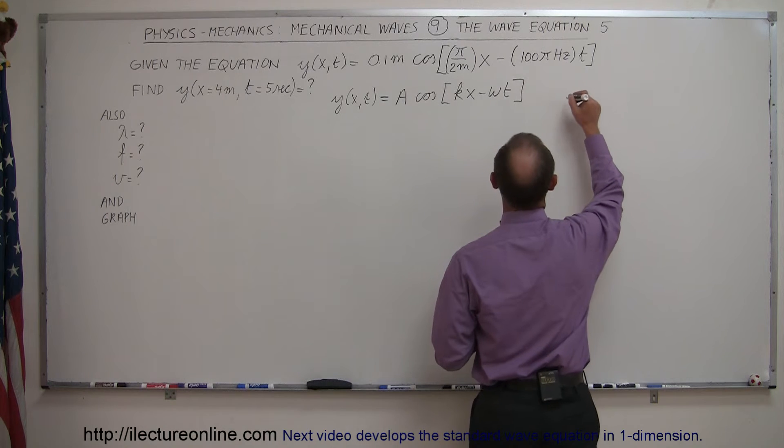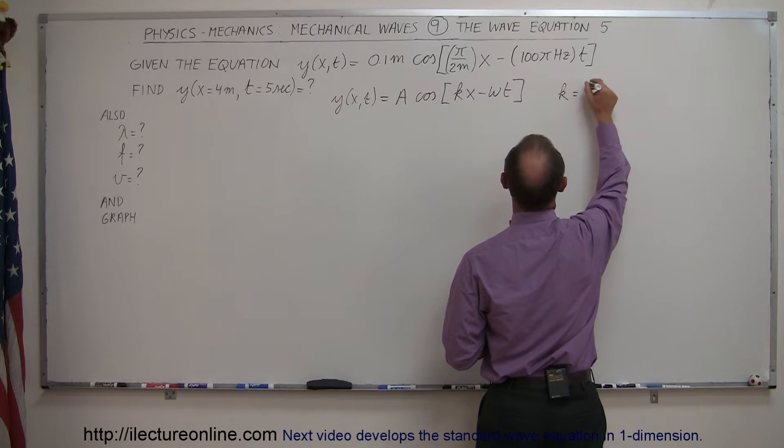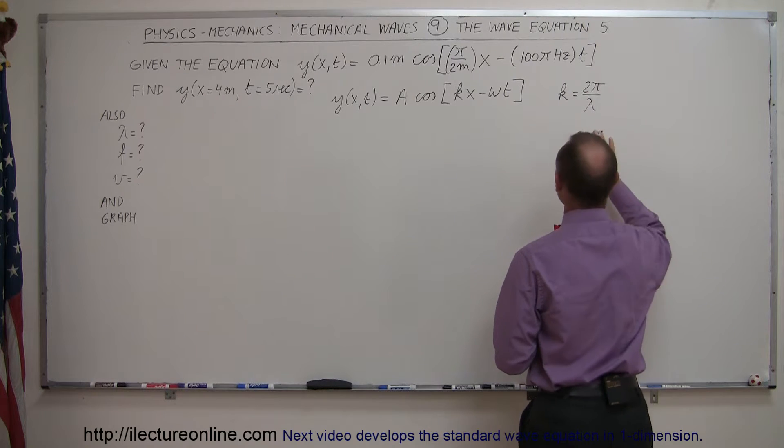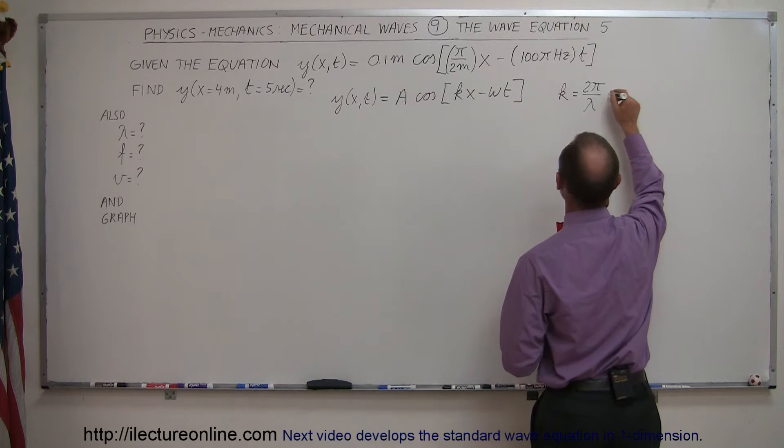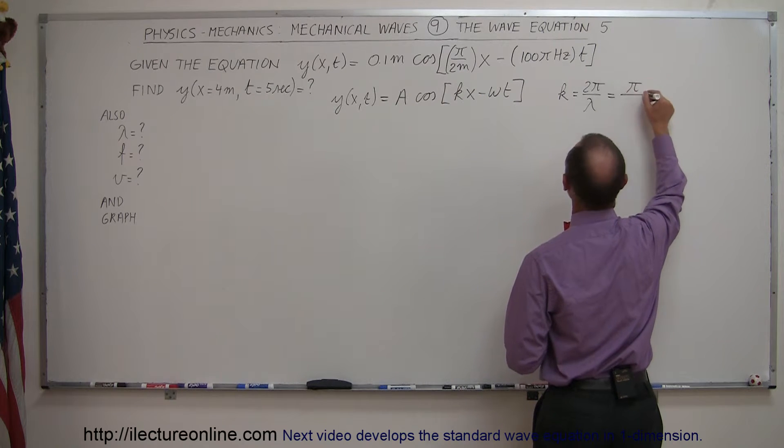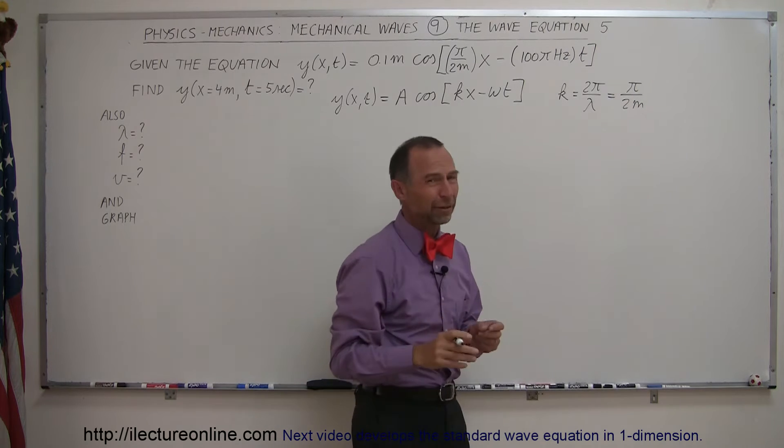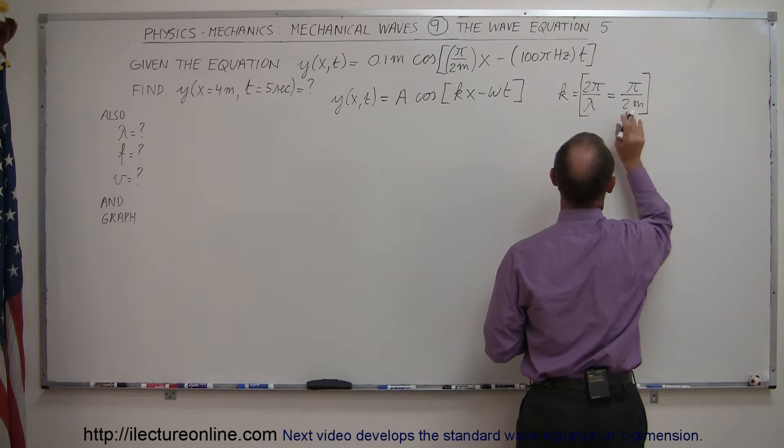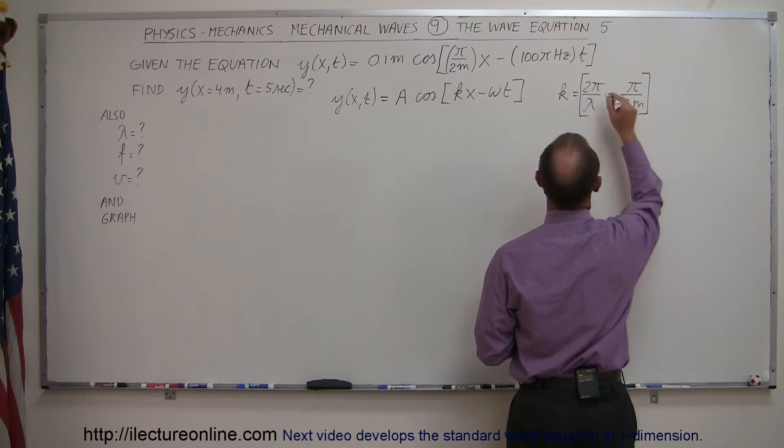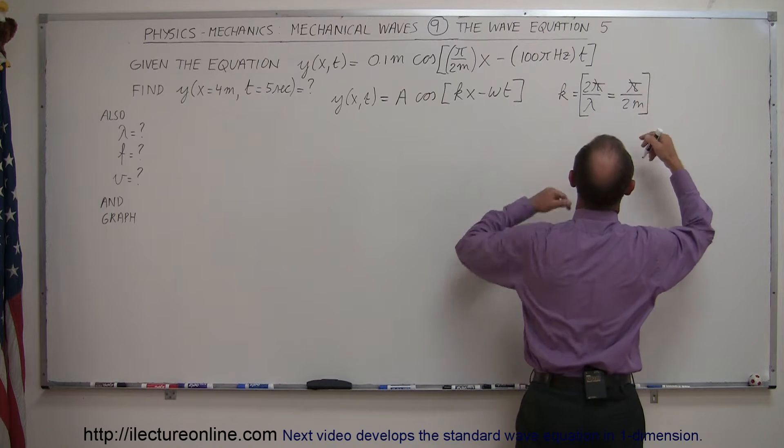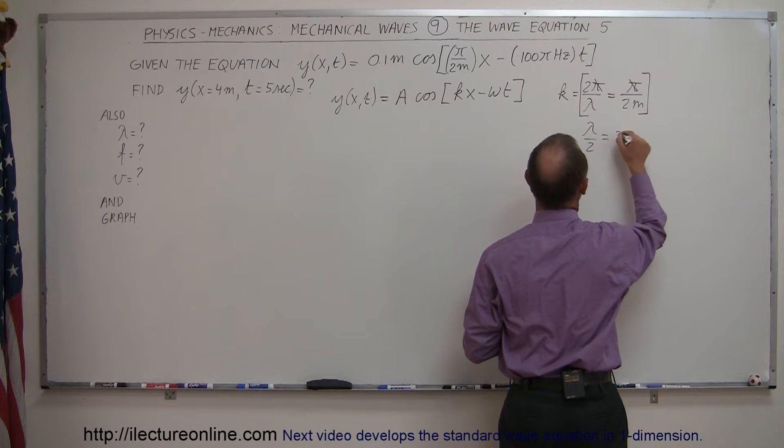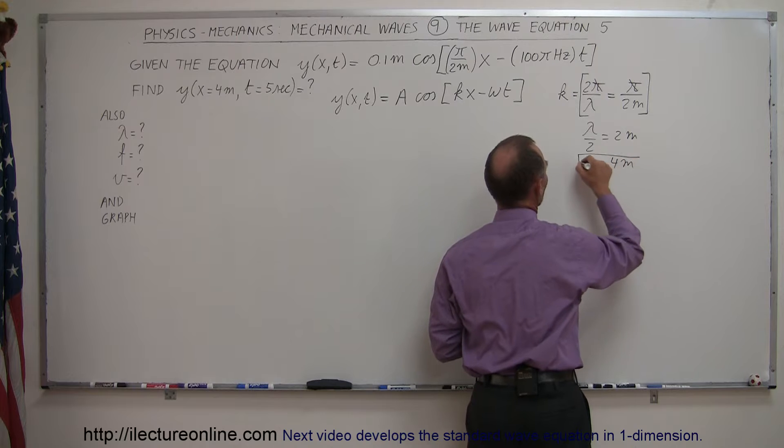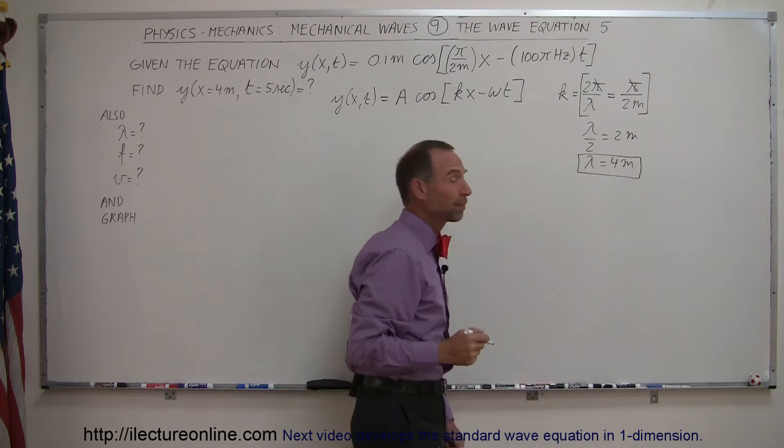It's always a good idea to write the standard form, so y as a function of x and t equals the amplitude times cosine of kx minus ωt. Right away you can see that k equals π/2 meters and ω equals 100π hertz. From this, we can figure out what lambda is equal to. Pi cancels out, so lambda divided by 2 equals 2 meters, which means lambda equals 4 meters.